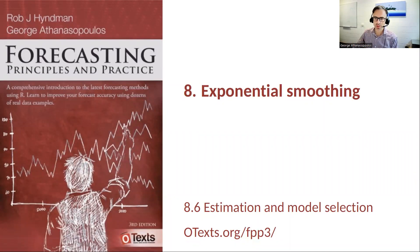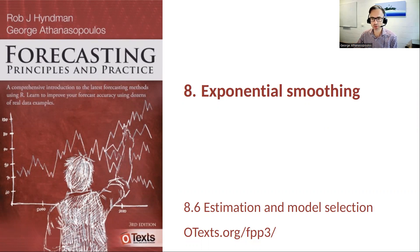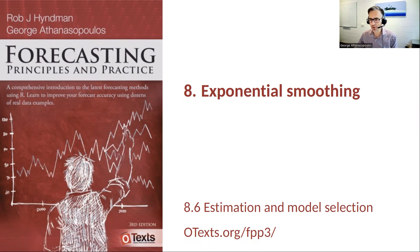In the previous section of the book we've seen a whole suite of exponential smoothing models — innovation state space models that underlie exponential smoothing methods. Specifically we saw 18 of these: nine with additive errors and nine with multiplicative errors. Now we need an efficient way of actually estimating these and a way of selecting between them, since we don't know which one to use or where to use them.